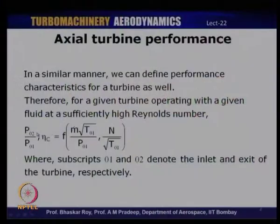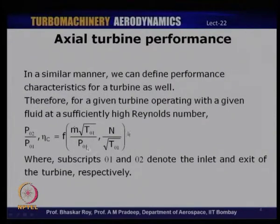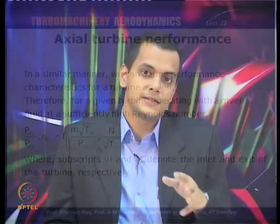The exact same logic can also be applied for a turbine. We will use similar non-dimensional parameters — mass flow rate times stagnation temperature divided by stagnation pressure, and speed N over root T₀₁ — for plotting the performance of axial turbines. Just like we did for the compressor, we will first look at pressure ratio versus mass flow rate as a function of varying non-dimensional speed, and subsequently look at the variation of efficiency.